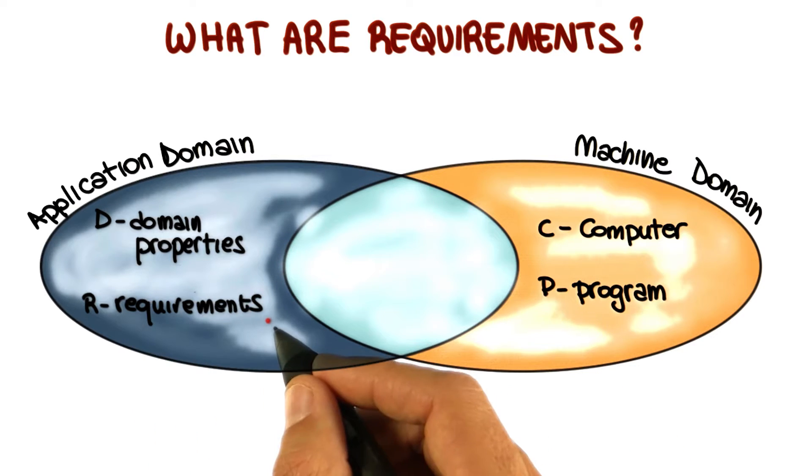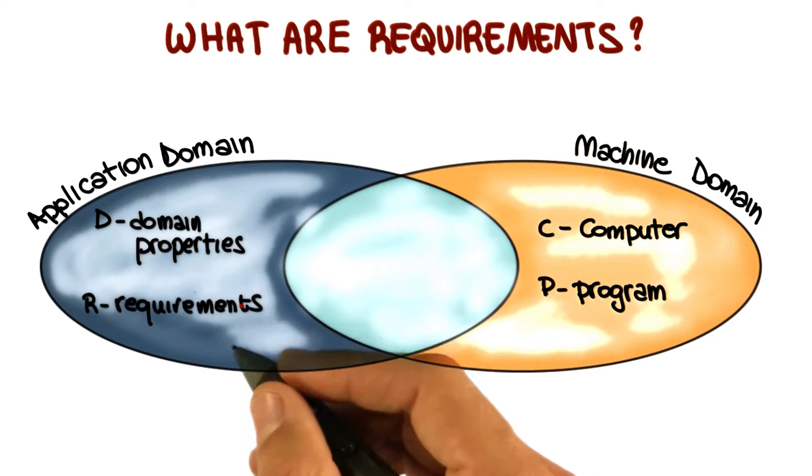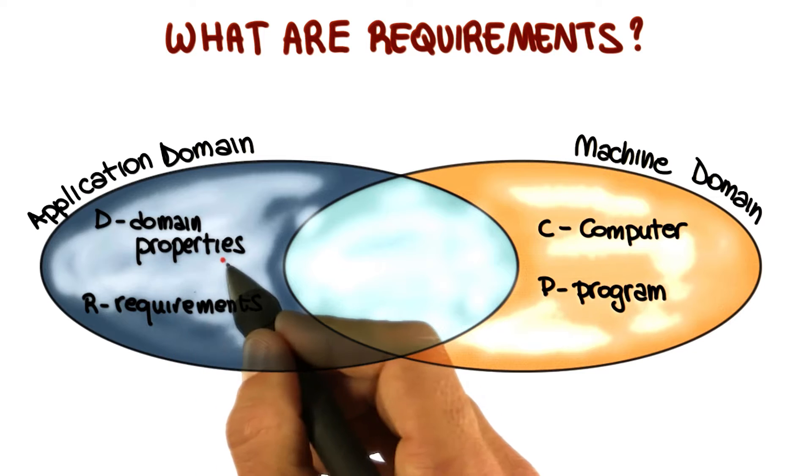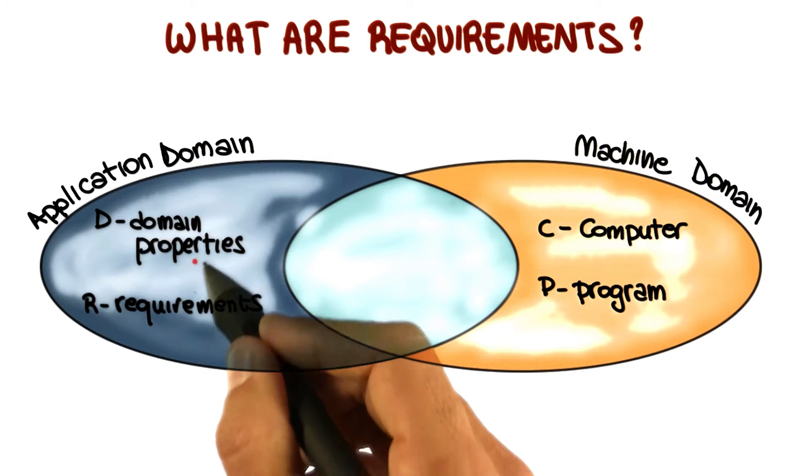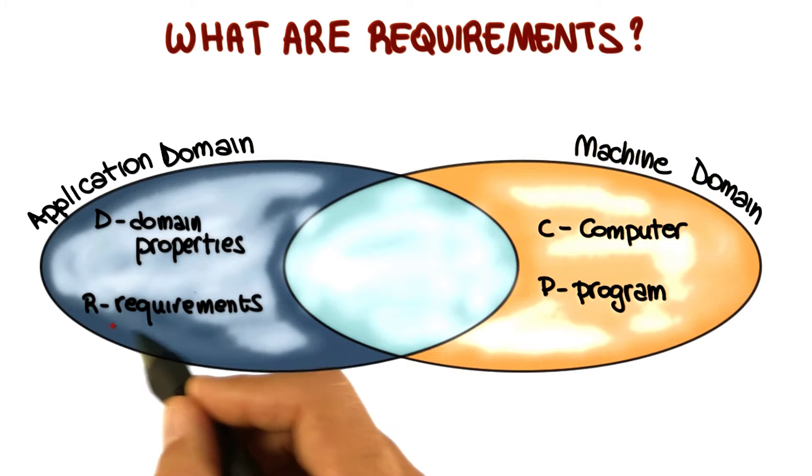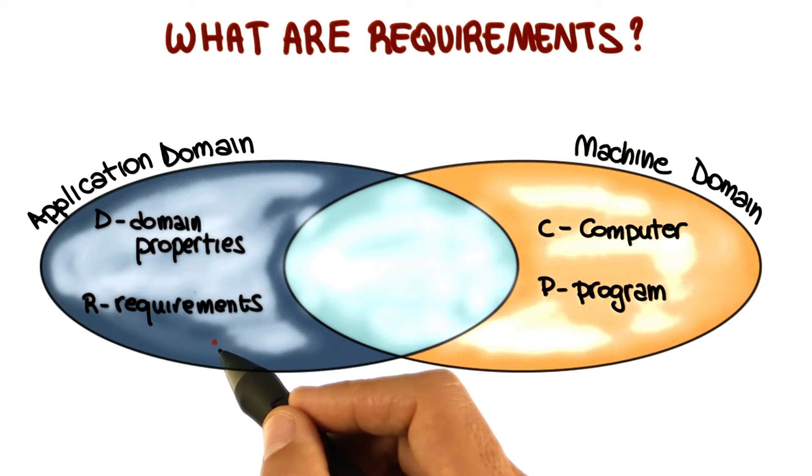And requirements, which are things in the world we would like to achieve by delivering the system that we are building. Basically, to put it in a different way, the former, the domain properties, represent the assumptions that we make on the domain. And the latter, the requirements, are the actual requirements that we aim to collect.